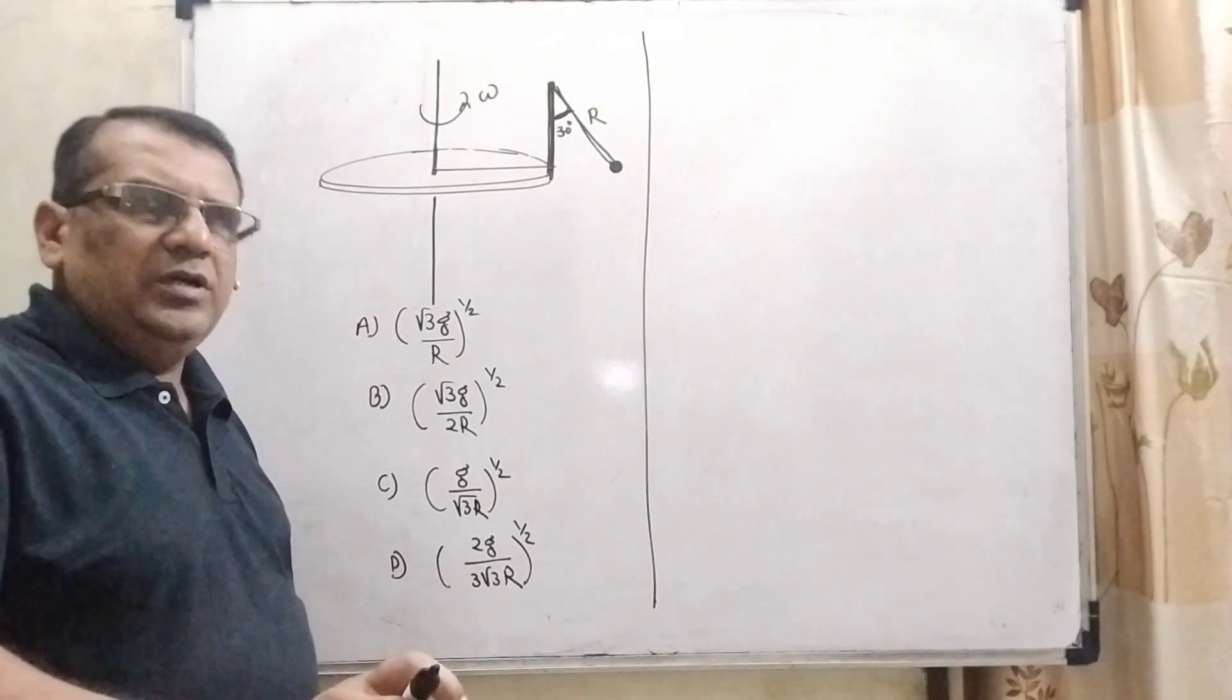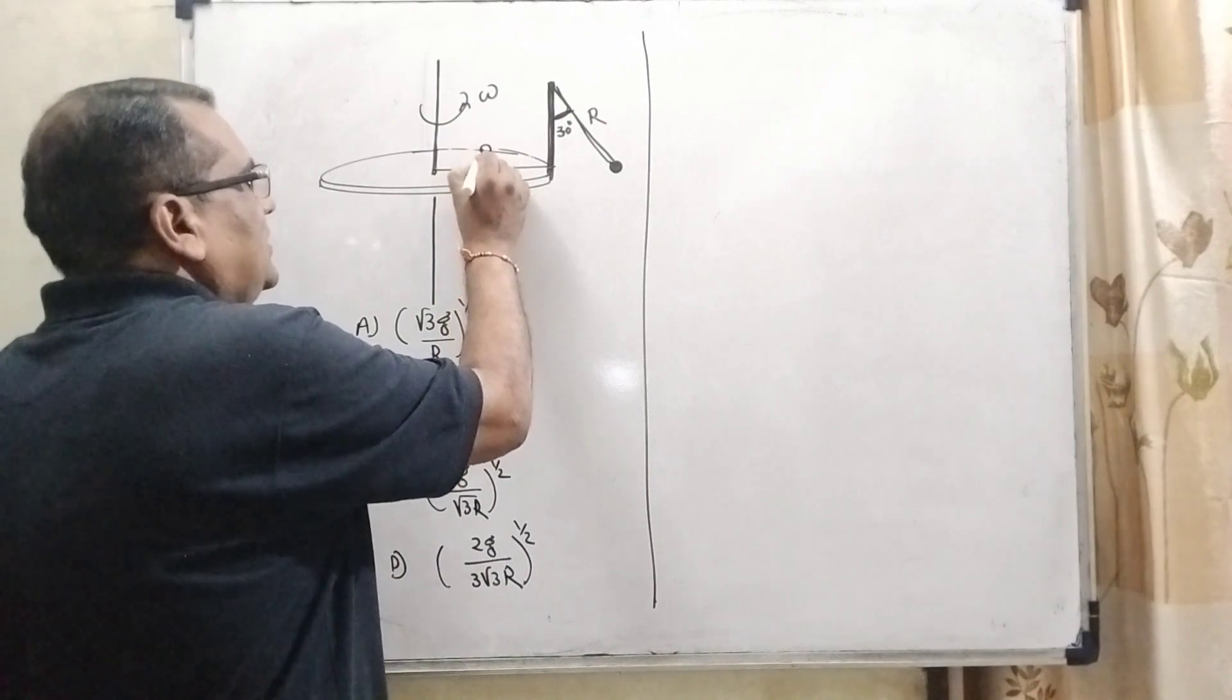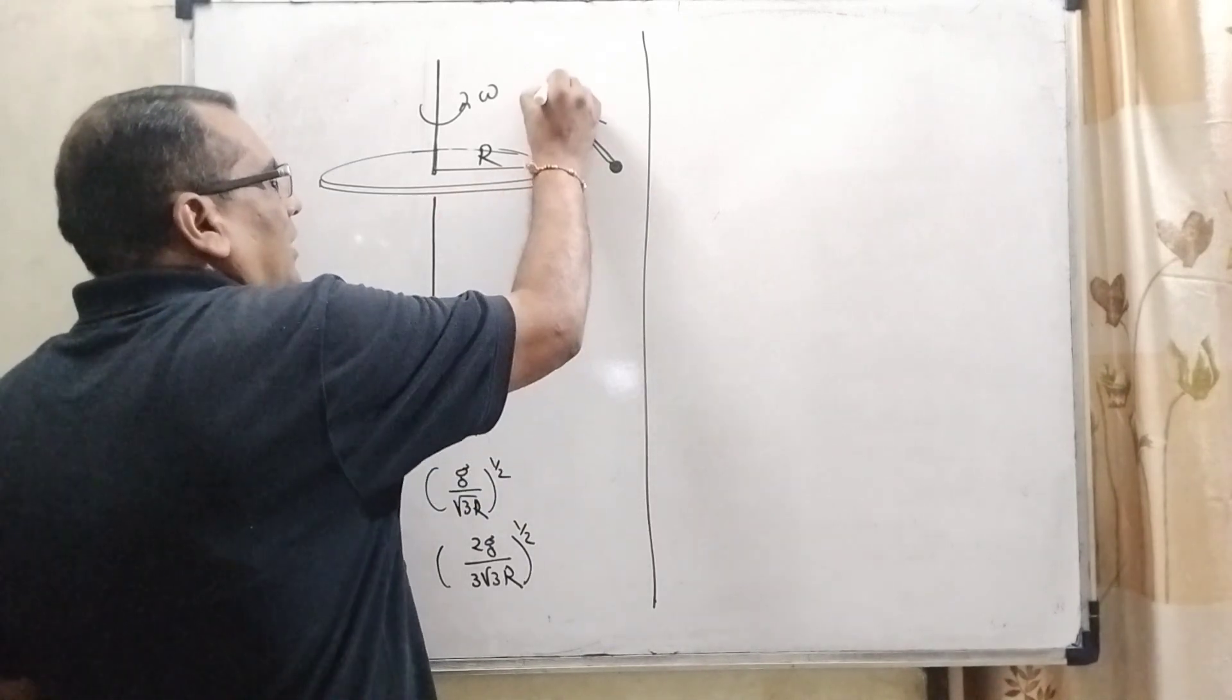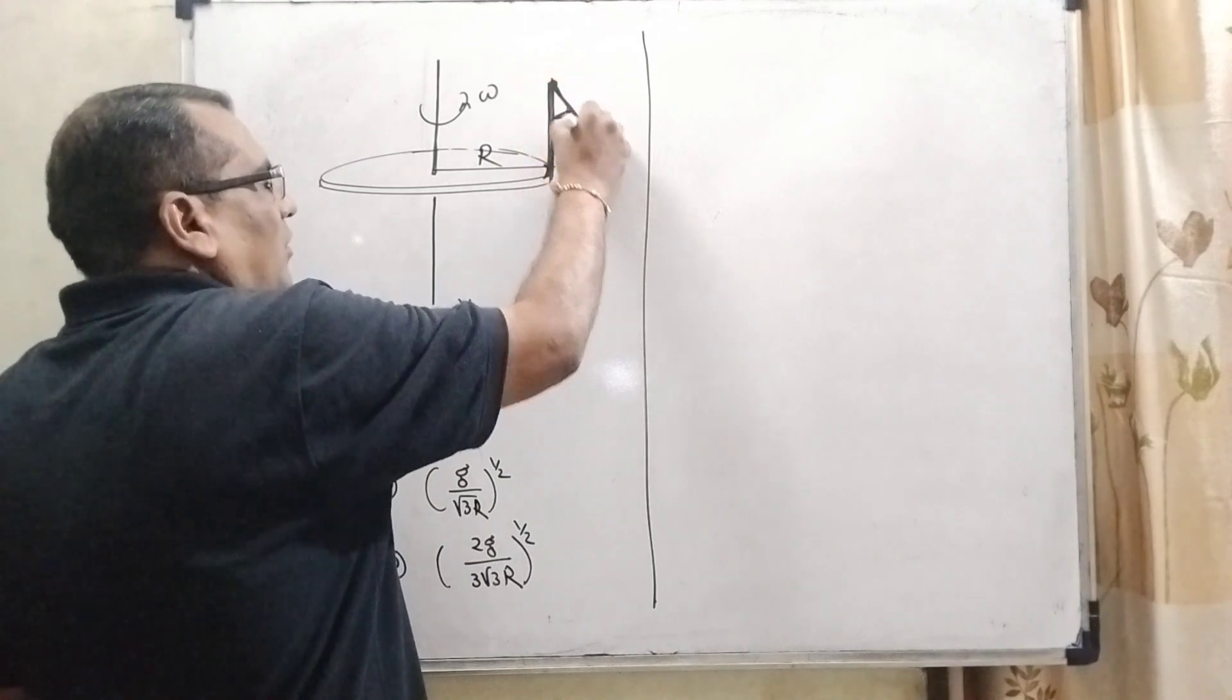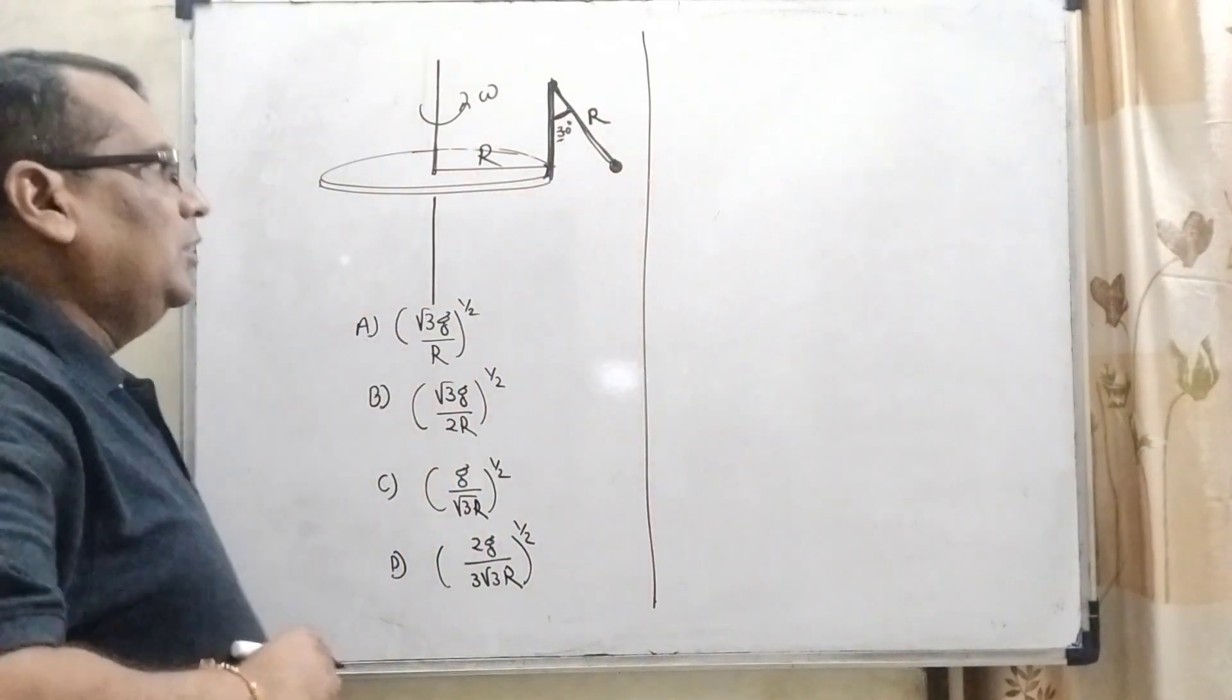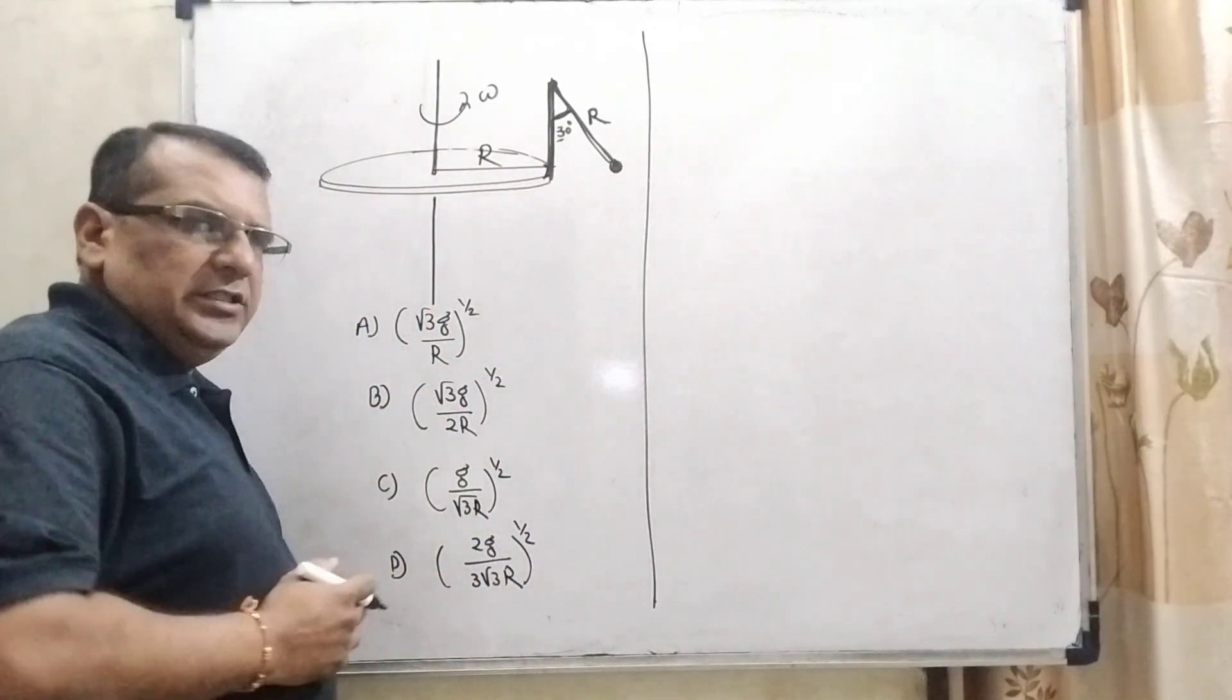First of all, we have to understand what the question says. Here, a disc is rotated with angular speed omega. Its radius is capital R. At the end, or we can say that the end of the disc in circumference, here one pole is fixed. And at the end of this pole, a pendulum is connected making an angle 30 degree and its radius is also R. Or we can say that the length is also R. And now it is rotated. Then we have to find out the angular velocity.